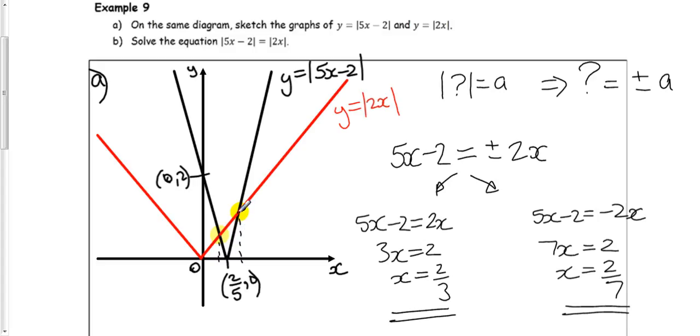So that solution there, x would be two-thirds. And the other one, x would be two-sevenths. And once again, we can quickly find out if our solutions are correct by substituting them back into the original equation. And if they work, we know they are correct.